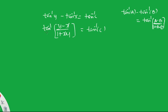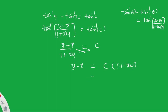Since tan⁻¹ cancels on both sides, we get (y − x) / (1 + xy) = c. Cross multiplying: y − x = c(1 + xy). This is the general solution for the first differential equation.